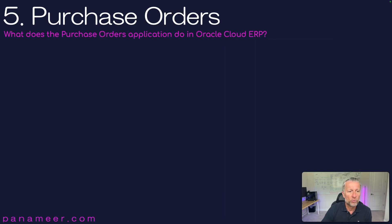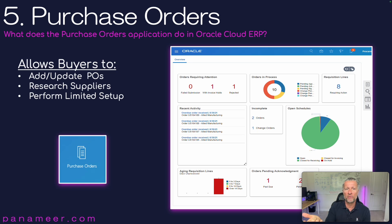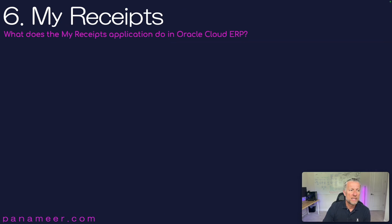Slide five: what does the Purchase Orders application do in Oracle Cloud ERP? This allows buyers to add and update POs and to research suppliers. Buyers can see suppliers based on data from previous interactions, based on qualifications, based on business relationships. They can also do some limited setup.